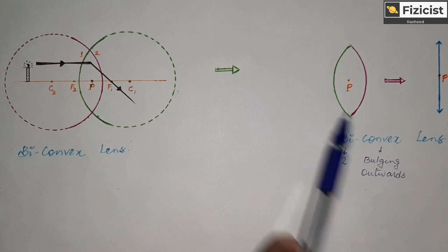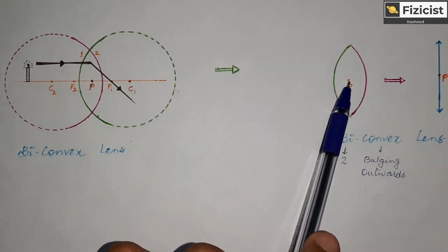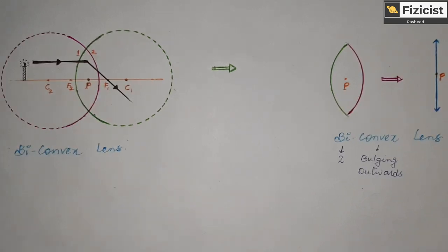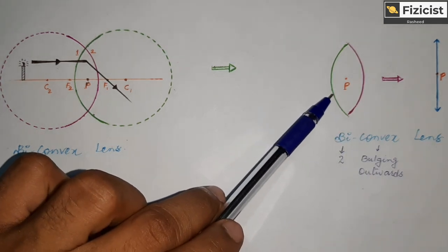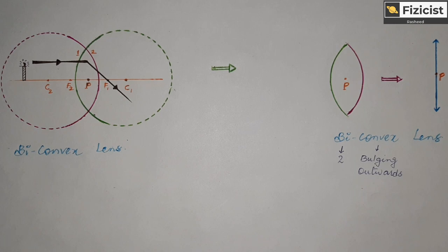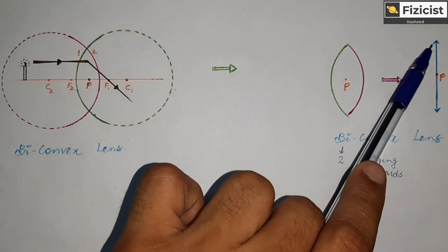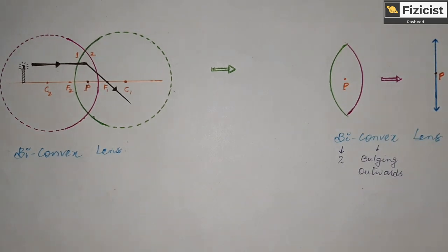This midpoint or geometrical center of the lens is called the optic center, indicated by P. While drawing ray diagrams it is not possible to draw the biconvex lens all the time, so for convenience we use a shorthand notation — the biconvex lens is indicated by a figure with two arrows on the two ends. Now let's move ahead and learn the ray diagrams to see how images are formed from a biconvex lens.